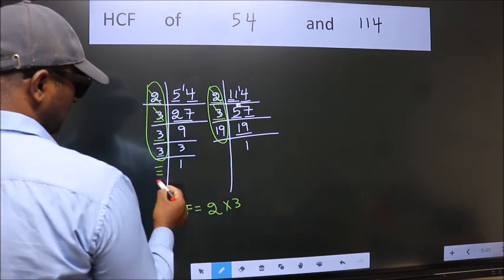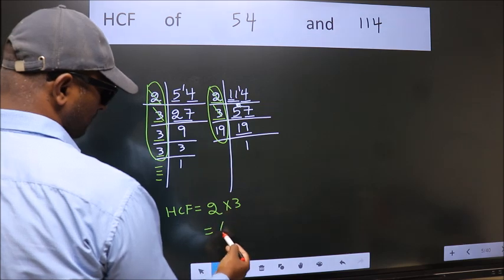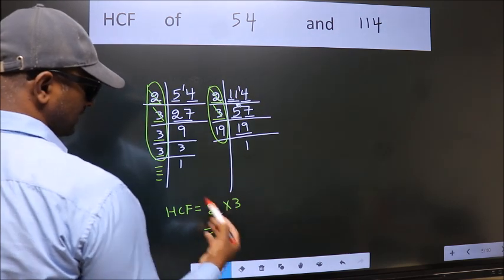No more numbers have been left out. So, our HCF is 2 into 3. 6 is our HCF.